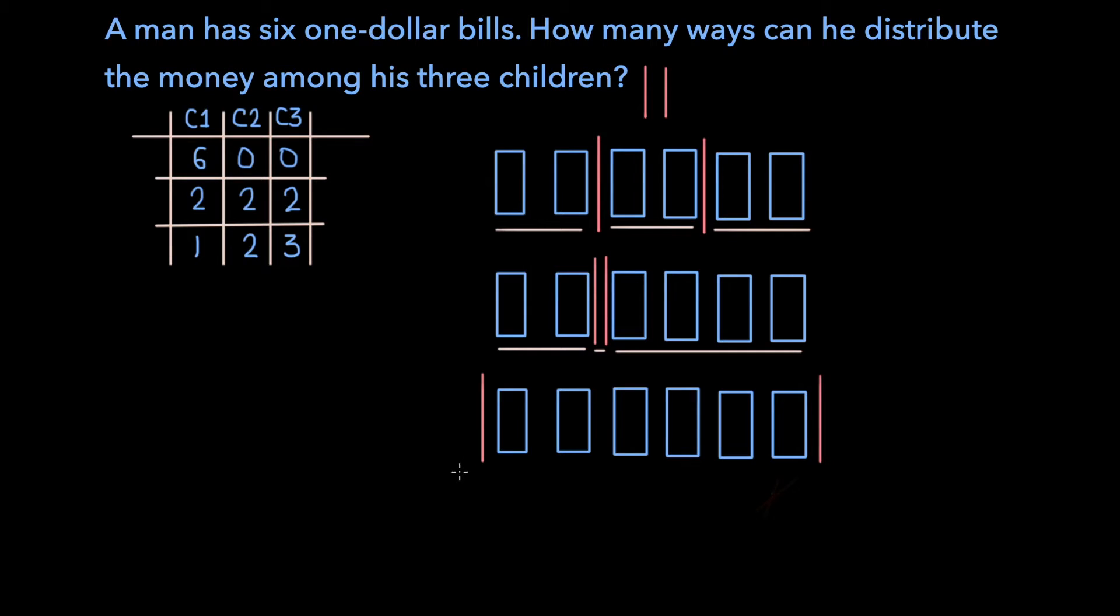Or the man could split up the money this way, where the first child gets nothing, the second child gets all $6, and the third child gets nothing as well.